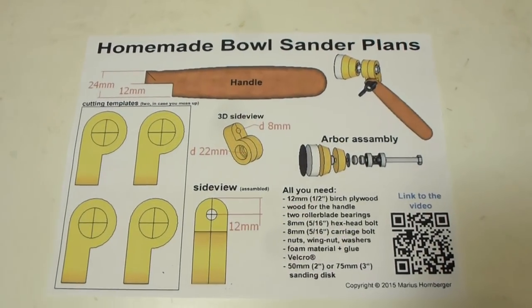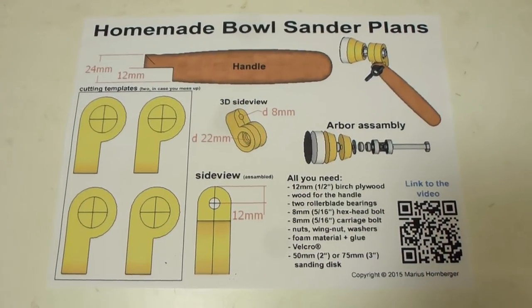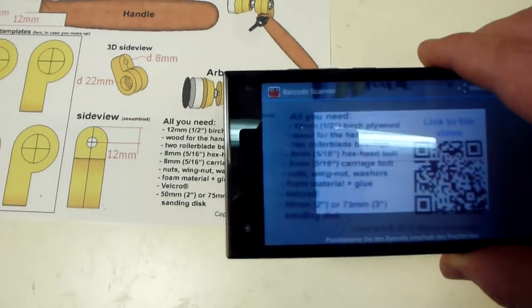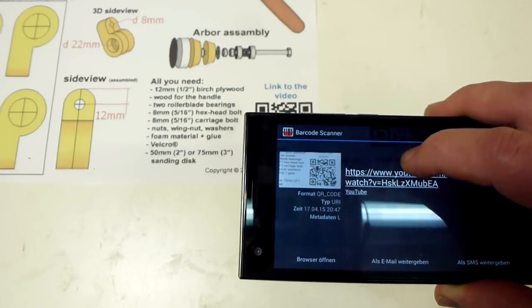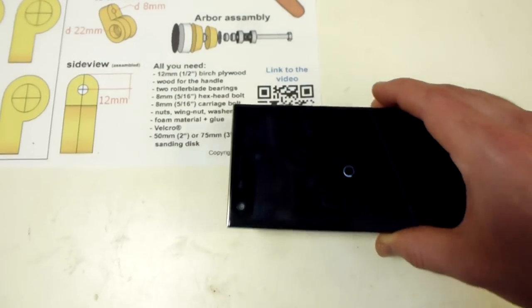The plans include pretty much every detail you need to build the sander and if you have your smartphone on hand in the shop, you can just scan the QR code and it will bring you directly to this video.